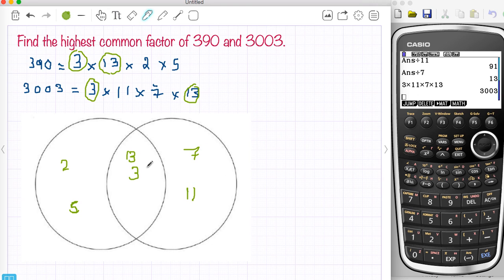Now the highest common factor are just the numbers in the middle. So the HCF is 3 times 13 and that's how you find the highest common factor using a Venn diagram. Very straightforward.